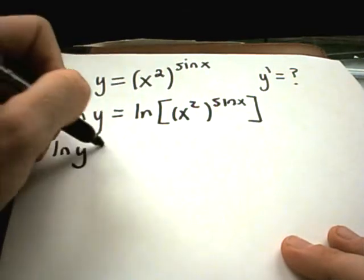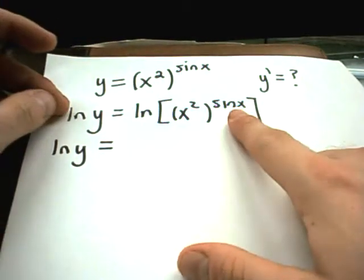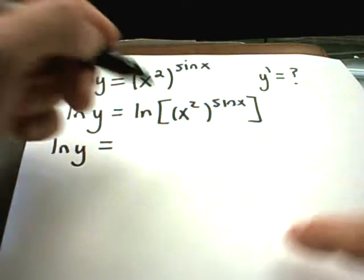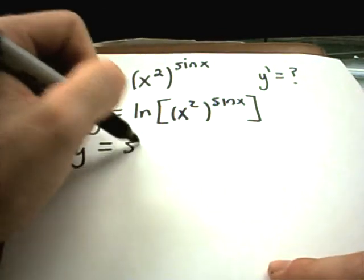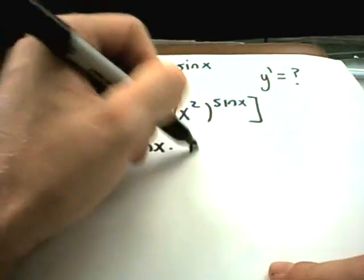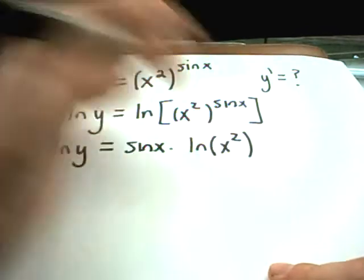So I'm not doing anything on the right. I'm now going to use my property that exponents can come out as coefficients. So I'll get sine of x times ln of what's left over, which is x squared.